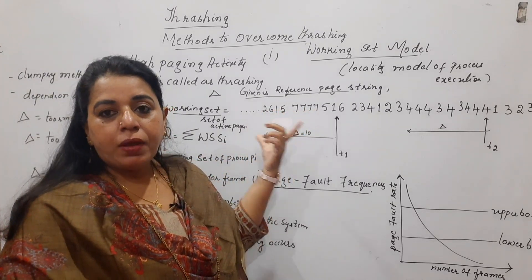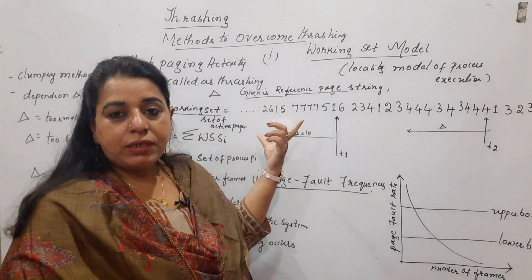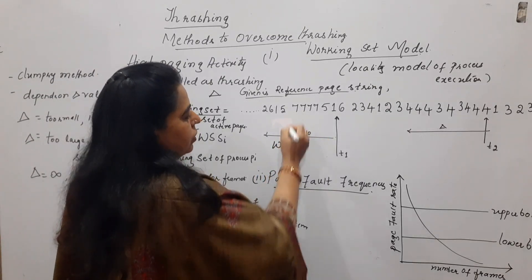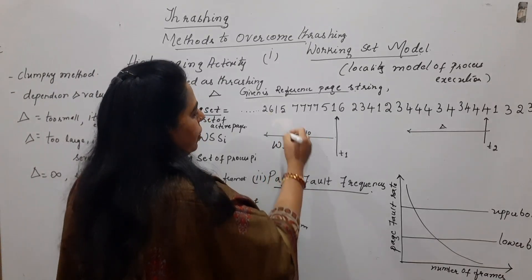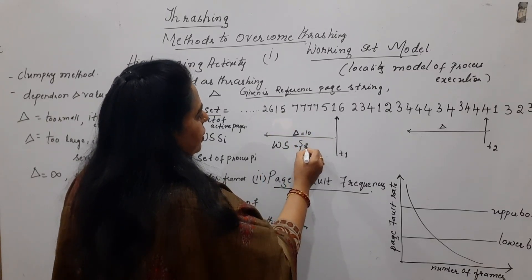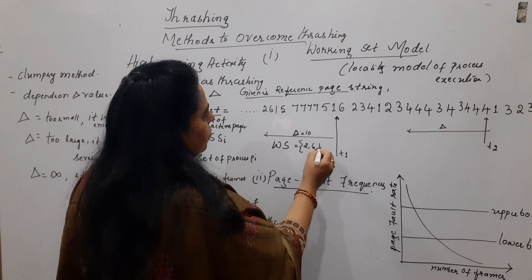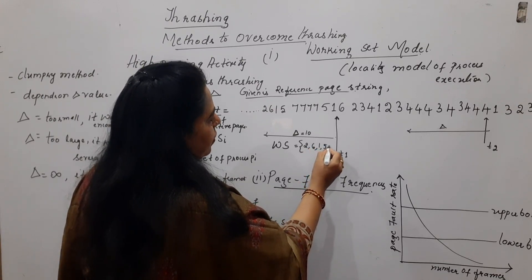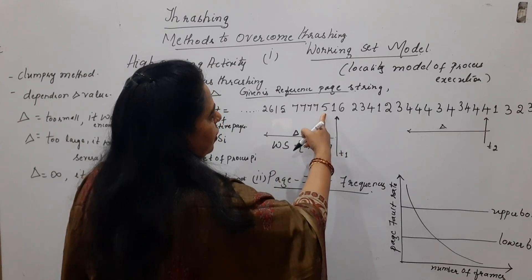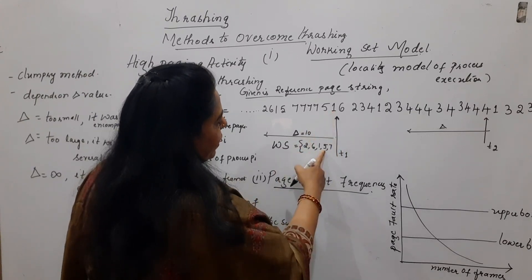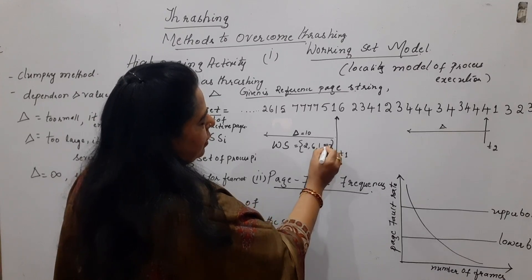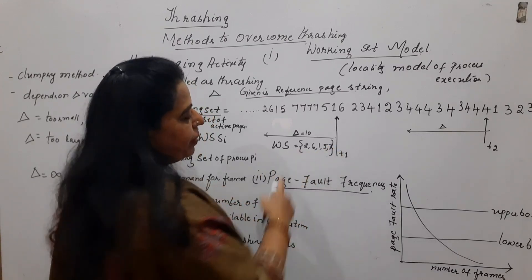Out of these 10 pages, note down which are the unique pages — that becomes your working set. The uniquely appearing pages are: 2, 6, 1, 5, and 7. Pages 5 and 1 each appear more than once but are written only once. So, the working set at time t1 contains 5 pages.